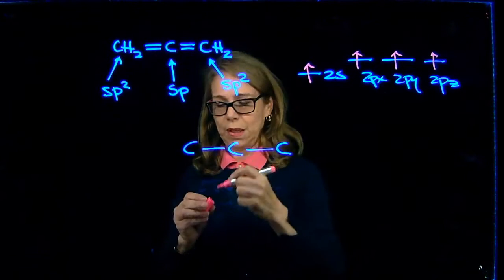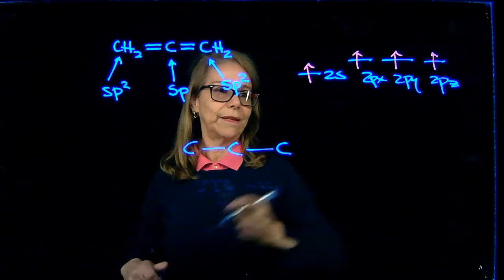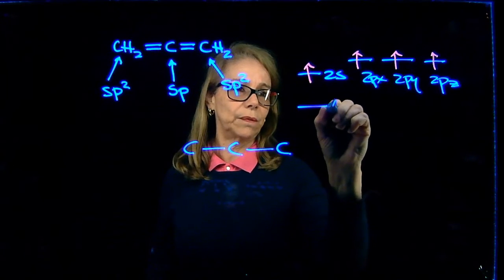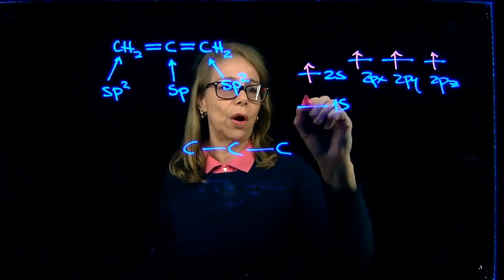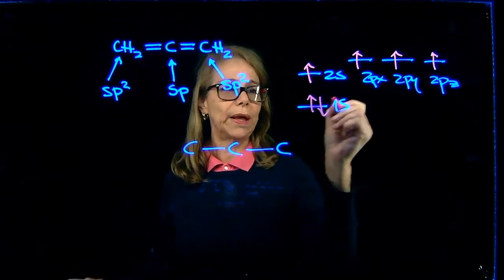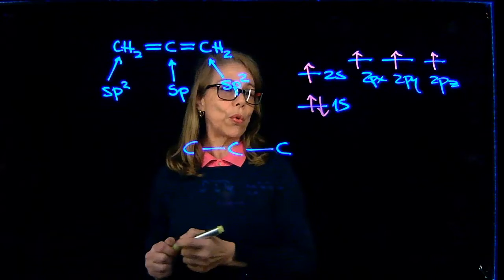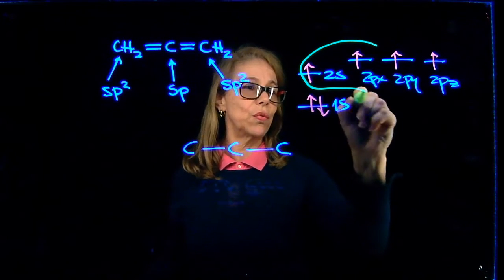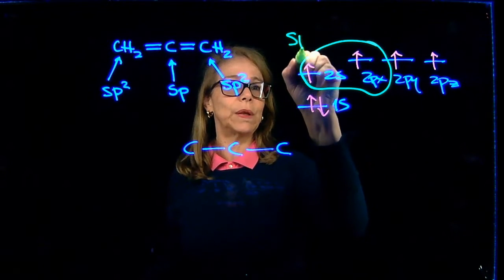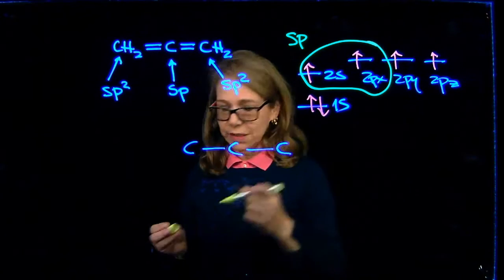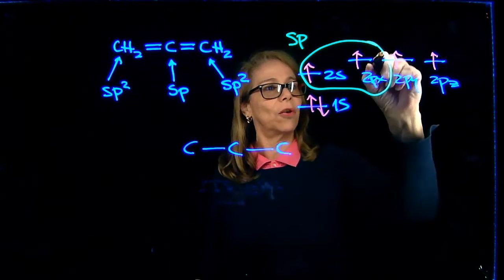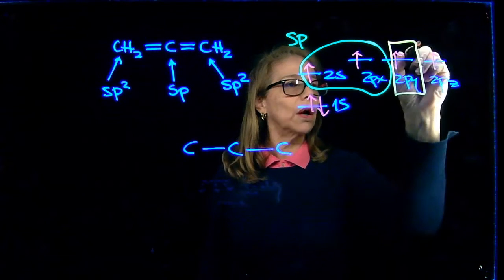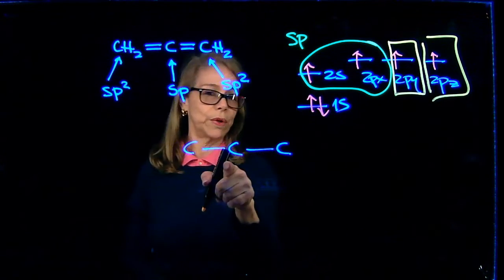One electron from the 2S orbital in the original isolated atom electron configuration. So we do that, and then we mix these two to make SP orbitals. And we have two P orbitals that are unhybridized. So here we go. And now I am drawing those.